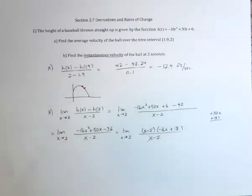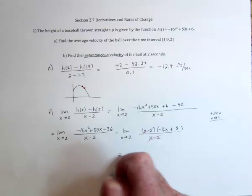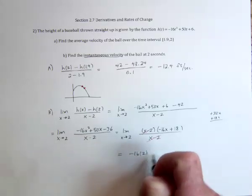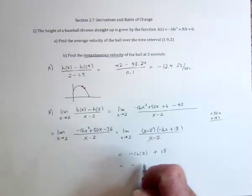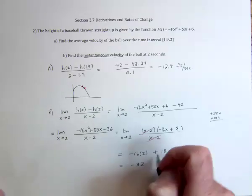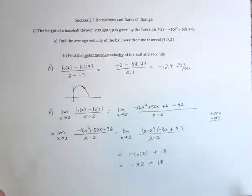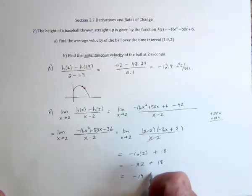And now there's no more division by 0. Substitute the 2. So it's going to be negative 16 times 2 plus an 18. And so the final answer seems to be negative 14 feet per second.